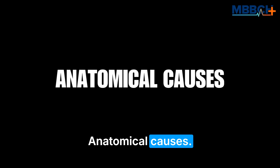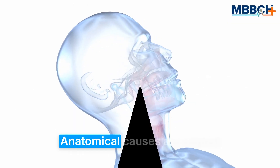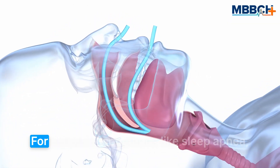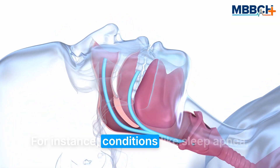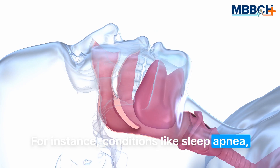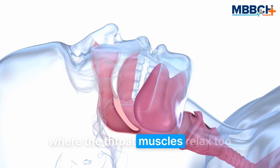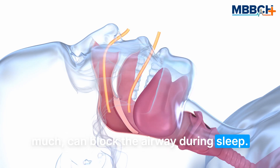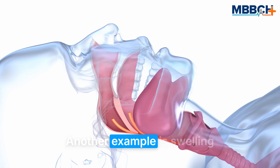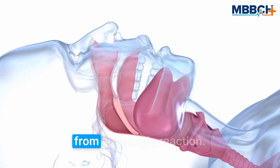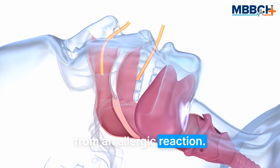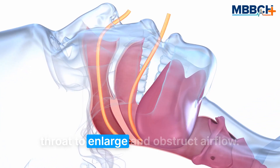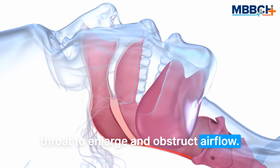Anatomical causes are related to the structure of the airway. For instance, conditions like sleep apnea — where the throat muscles relax too much — can block the airway during sleep. Another example is swelling from an allergic reaction, which can cause the tissues in the throat to enlarge and obstruct airflow.